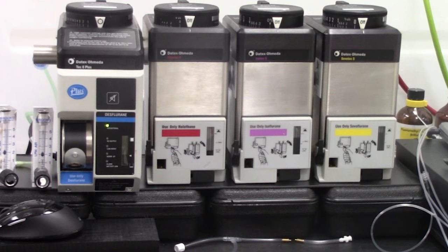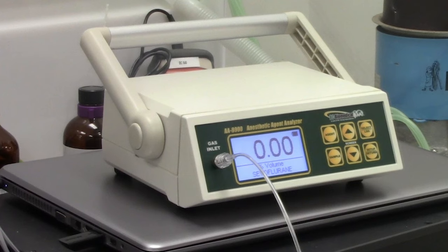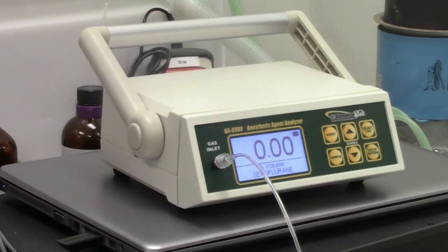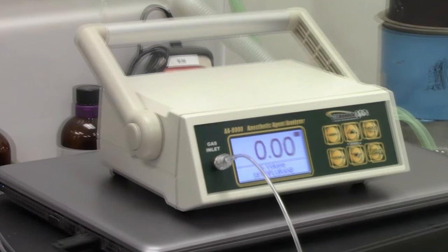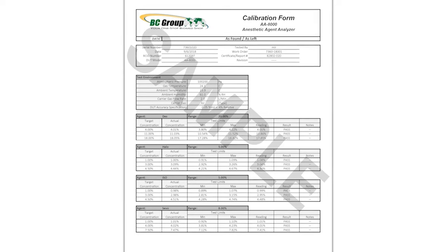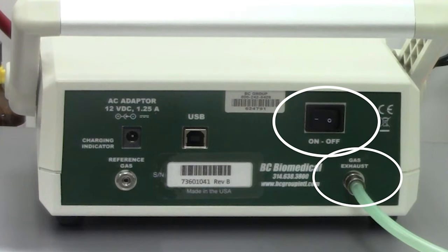To test your anesthetic agents you will need scavenger tubing and the AA-8000 Anesthetic Agent Analyzer. The AA-8000 includes a 12-point calibration certificate. Notice on the back of the Analyzer is the gas outlet and the power switch. The Analyzer can be battery operated or line powered.